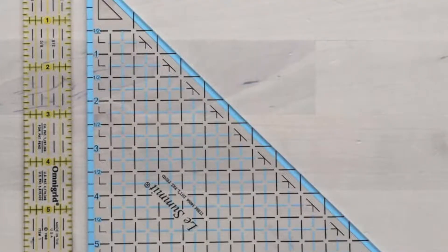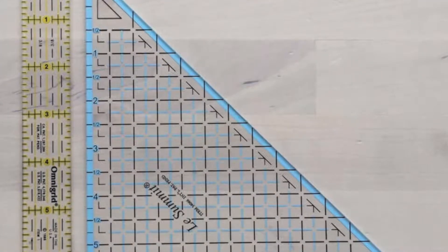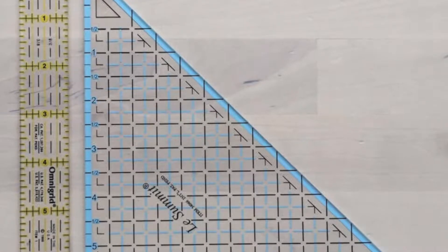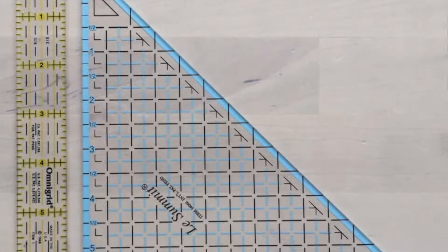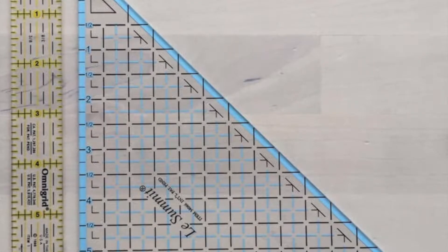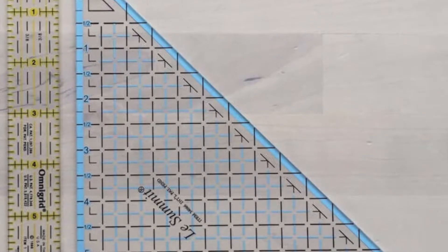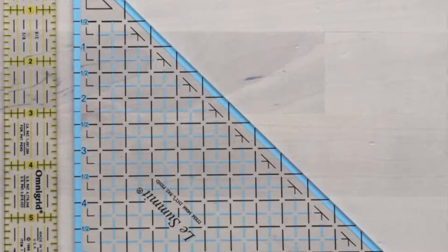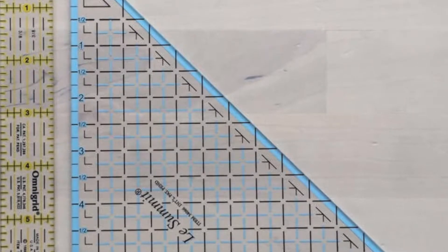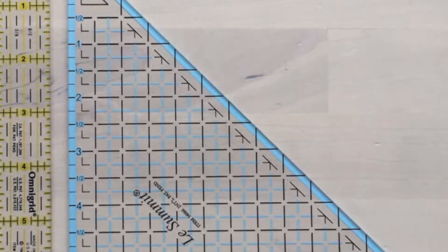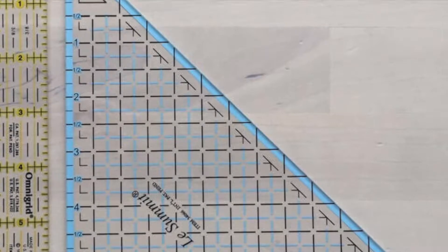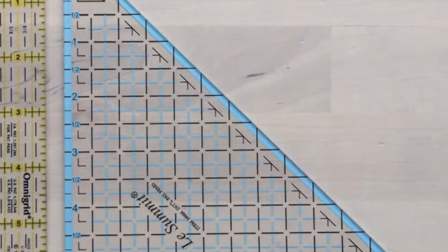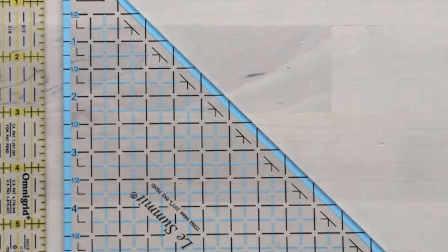The width of fabric strips you will need will be determined by the quilting ruler that you are using. On my ruler I can see that because I want two and a half inch finish size units I cut three and a quarter inch strips. Your ruler should come with instructions or ask for help at a local quilt shop.